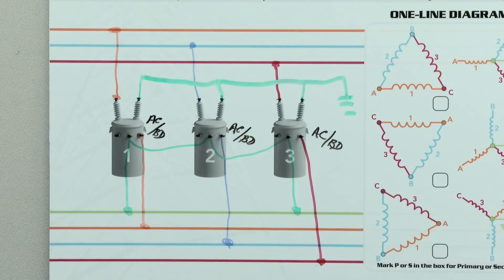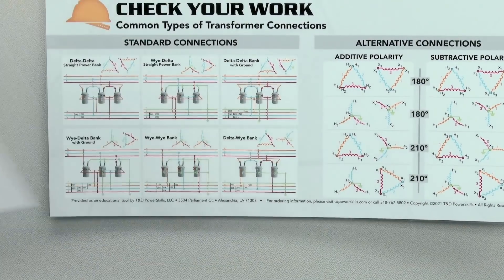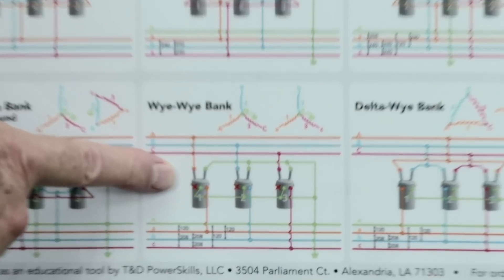Finally, after the line worker has completed the secondary connections, we can remove the paper to check the work. This is a standard YY connection.